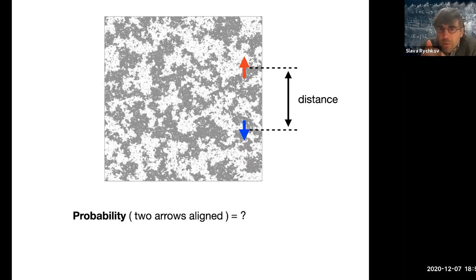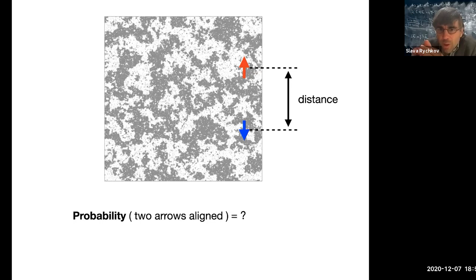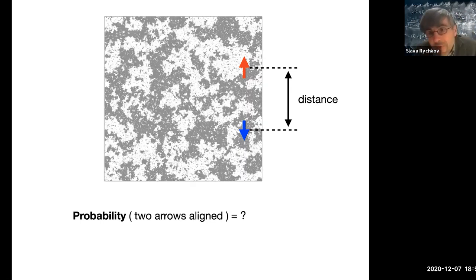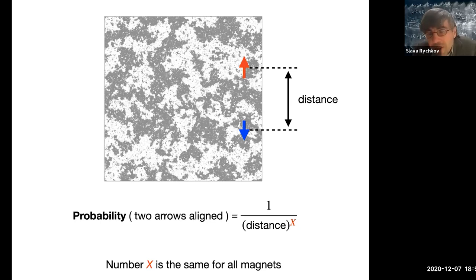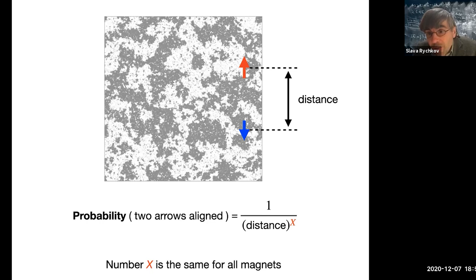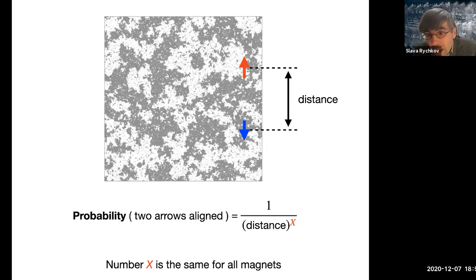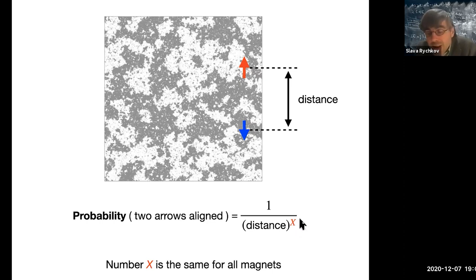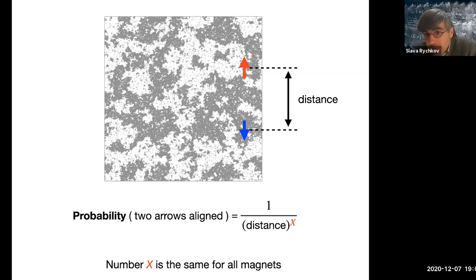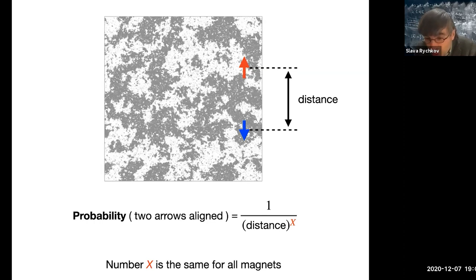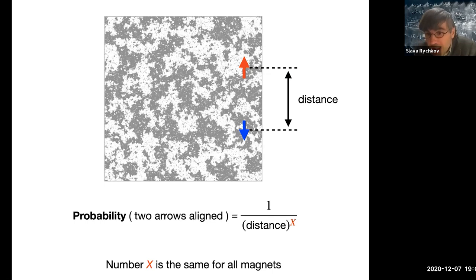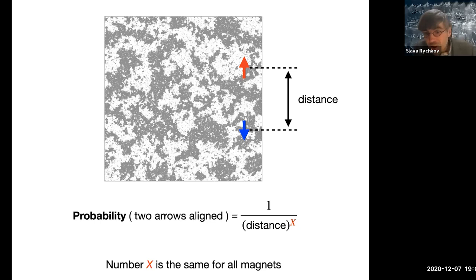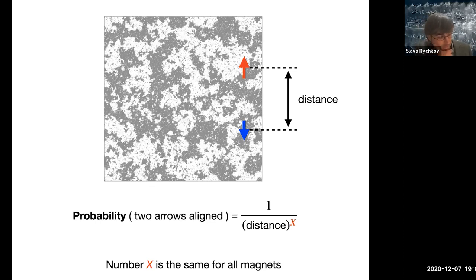This function is going to be a decreasing function of the distance — that much you can guess without any computation. But what is the shape of this function? It turns out that if you take a magnet and put it precisely at the fridge fall-off temperature, this probability takes a very simple form: it's one over the distance between these two arrows to some power, call it x. And this power x — this particular number — is the same for all magnets. So this number is totally universal.